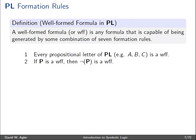Second, if we have a formula that meets the criteria of being a WOOF, then we can form another, more complex formula by putting parentheses around it and the sign for negation to the left of it. Third, if we have two formulas that meet the criteria of being WOOFs, then we can form a new, more complex formula by putting parentheses around both formulas and putting the caret, or sign for AND, between them.